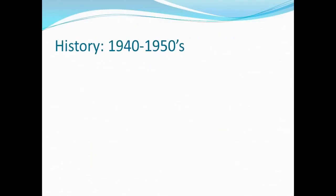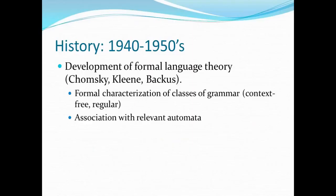In the 40s and 50s, there were really two fundamental paradigms that developed formal language theory. You hear names like Chomsky, Kleene, and Bacchus — they were interested in the formal characterization of grammar, particularly context-free grammar and regular grammars, and associating those grammars with the relevant machinery or automata. There are different powers of automata based on the type of language you're trying to recognize.